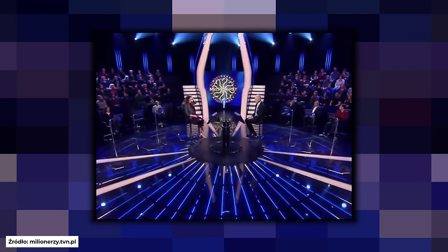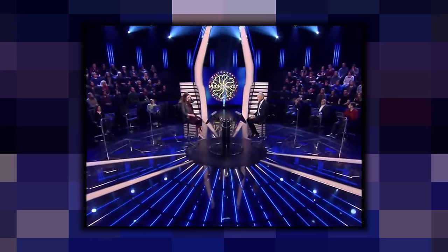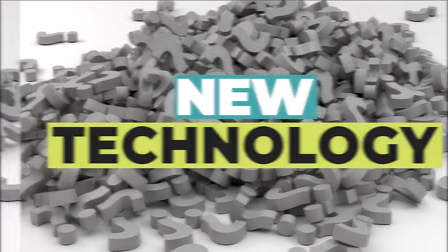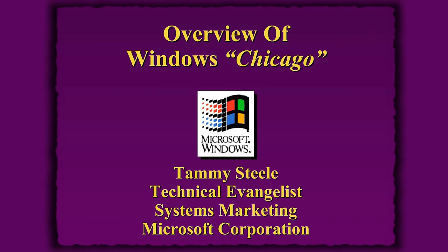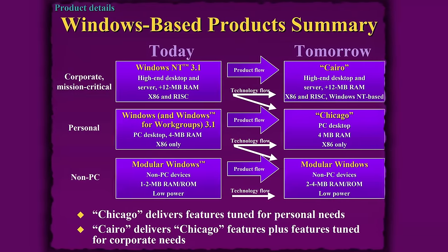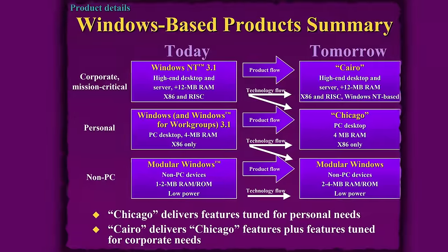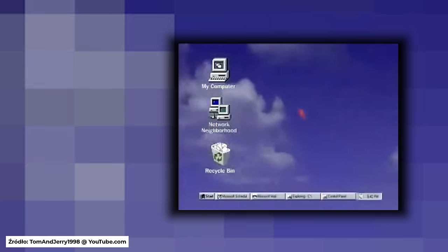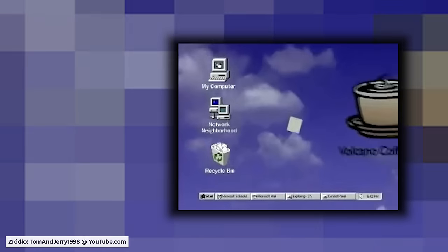Mała dygresja: pamiętam jak w programie Milionerzy padło pytanie, co oznacza akronim NT — otóż NT to New Technology. Dzięki wyciekłym prezentacjom z pierwszej połowy lat 90. wiemy, jak Microsoft widział przyszłość swoich systemów: Windows NT miał być zastąpiony przez Cairo, a okienka z serii 3 przez Chicago. Wszystko było zaplanowane, daty premier mniej więcej znane. Dziś wiemy, że Win 93 mimochodem ochrzczono nazwą Windows 95, a Cairo nigdy nie wydano.